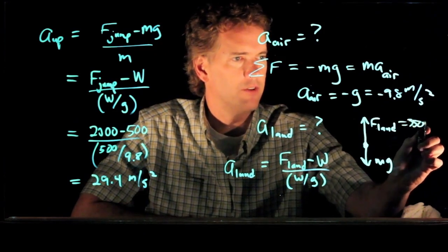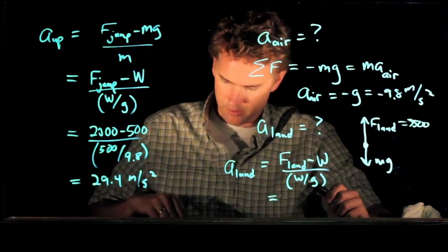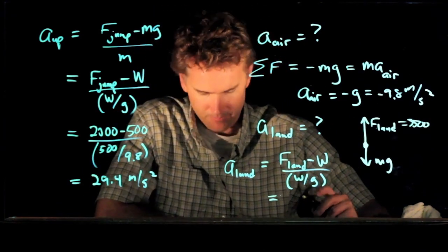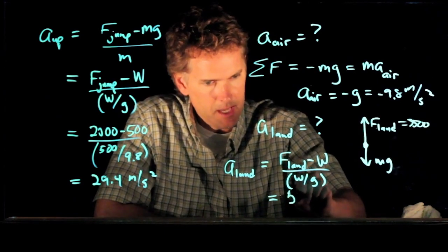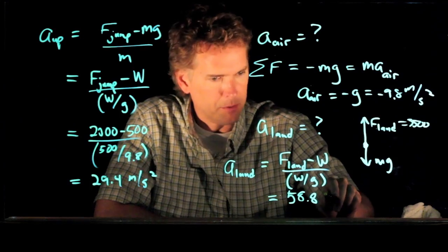And we have all those numbers from the graph. F_land was 3,500 newtons. And so you can plug in those numbers. And if you plug in those numbers, you should get 58.8 meters per second squared.